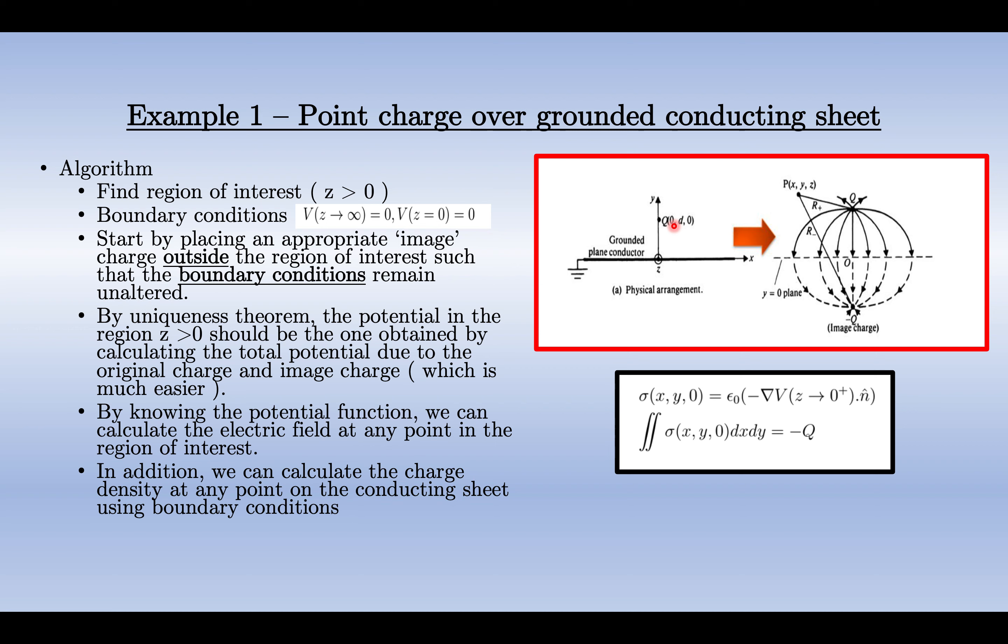So how do we apply this method? First we need to look at the region of interest, which is z > 0, and we are not interested in z < 0. That point is important. Then the boundary conditions are: as z goes to infinity, the potential is 0 because the charge is in a finite region and there is no infinite electric field or anything like that, and potential at z = 0 is 0 because it is grounded.